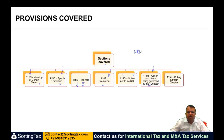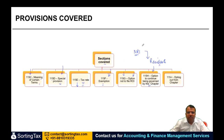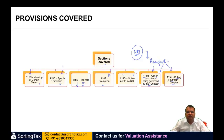Section 115H covers the option to continue being governed by this chapter. Suppose an NRI was such for some years and then became a resident — he moved to a foreign country and came back. He had invested in certain things as an NRI. Whether the benefits he was getting as an NRI would continue or not, and whether it is optional or mandatory for him to opt these provisions, is covered in 115H. When you become a resident, it is not compulsory; you can also opt out and be governed by normal provisions. So you can opt out from this chapter. These are all the provisions discussed in this presentation.